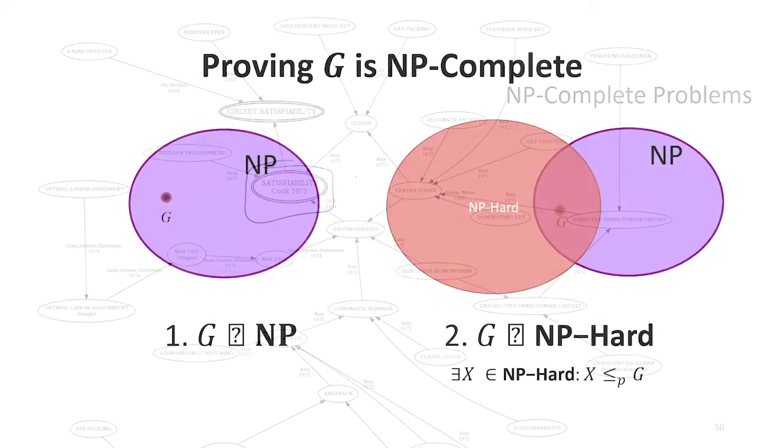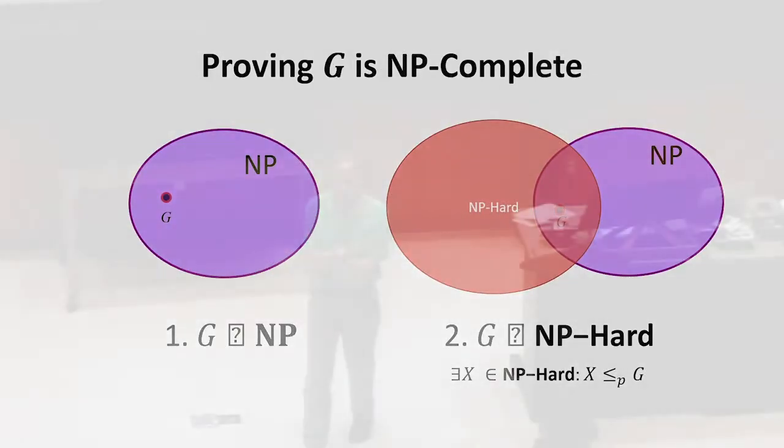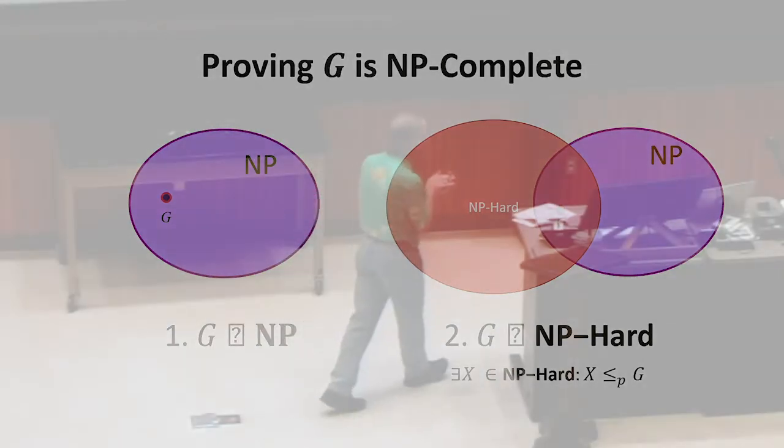If we want to prove a problem is NP-complete, we've got to do two things. We've got to show that it's within class NP. That's an element of. And we've got to show that it is NP-hard.